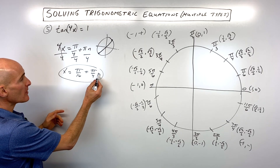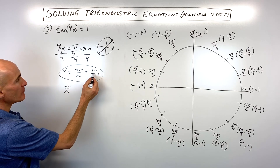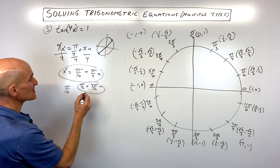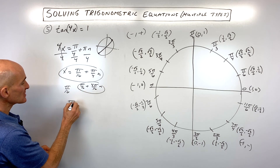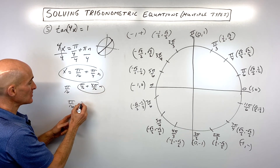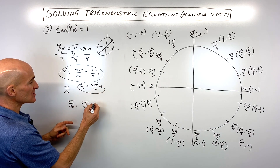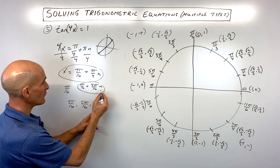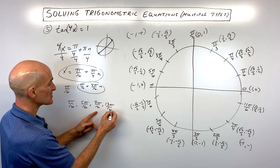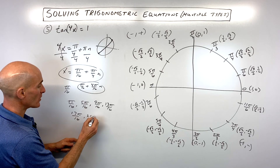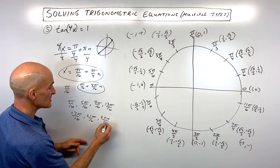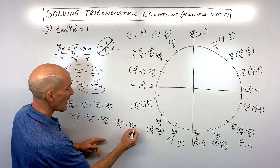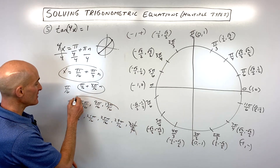To find all angles between 0 and 2π, we substitute values of n. Note that π/4 = 4π/16, so x = π/16 + (4π/16)n. For n = 0: π/16. For n = 1: 5π/16. For n = 2: 9π/16. Continuing: 13π/16, 17π/16, 21π/16, 25π/16, 29π/16. The next value, 33π/16, exceeds 2π, so we stop there.